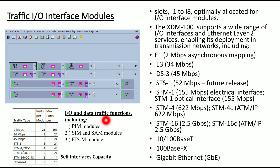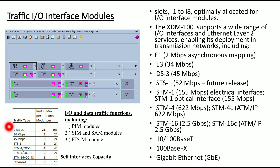Input-output and data traffic functions include: PIM for the PDH interface module, SIM for the SDH interface module, SAM for the SDH aggregator module, and EIS for Ethernet cards. Traffic types, ports per module, and maximum ports are listed here — for example, 2 Mbps has 28 ports per module and a maximum of 168 ports.